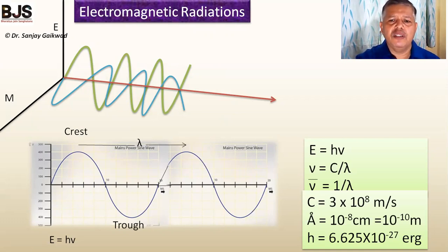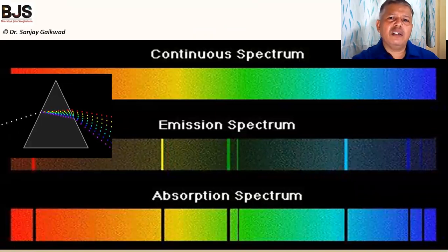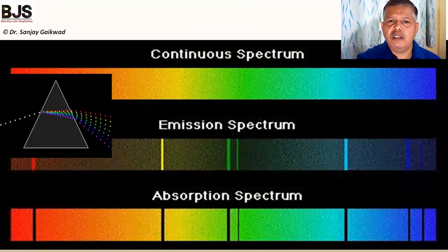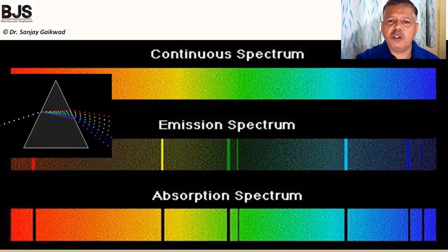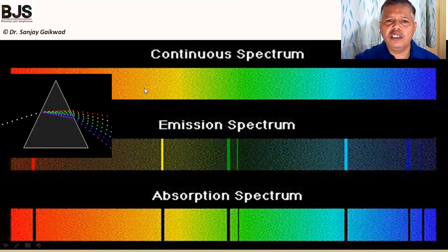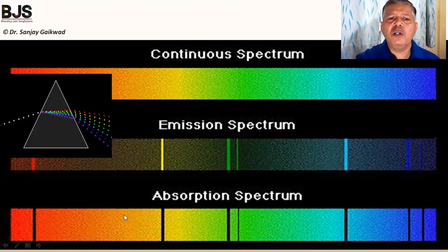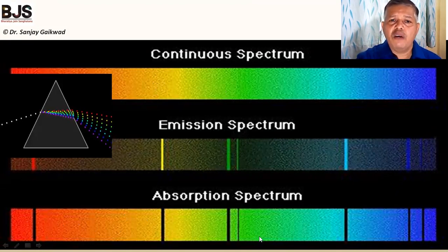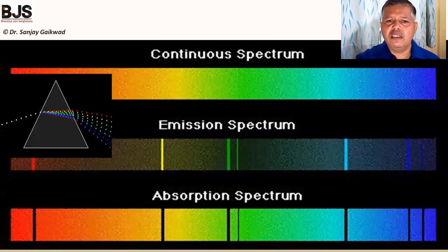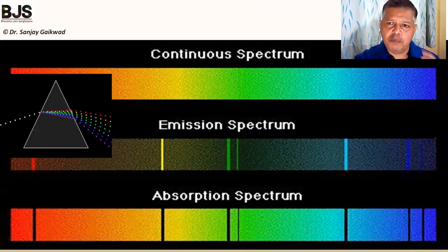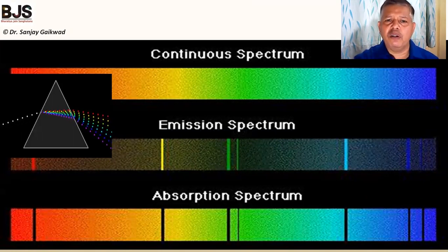There are three types of spectra: continuous spectrum, emission spectrum, and absorption spectrum. The continuous spectrum has no gap between the colors. The emission spectrum has only lines of colors on a black background. In the absorption spectrum, there are dark bands between colored bands. The continuous spectrum comes from sunlight, the emission spectrum from atoms or molecules, and the absorption spectrum is observed when light gets absorbed by the molecule.